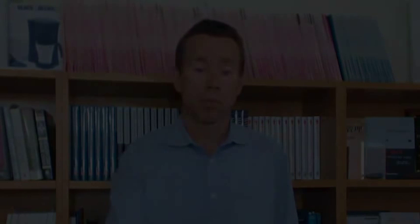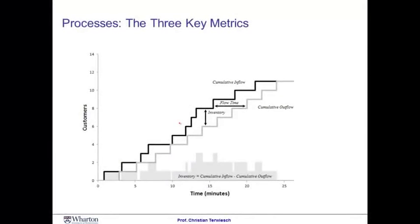To see the intuition behind Little's Law, let's take another look at some of the analysis we've done in an earlier session on the Subway restaurant. Remember how we were sitting in front of the Subway restaurant, keeping track of the inflow of customers as well as the outflow. We refer to the vertical difference between these graphs as the inventory — the number of customers in the system — and the horizontal difference as the flow time, how long a specific customer stayed in the restaurant. This is not a formal proof of Little's Law, but the intuition behind it.